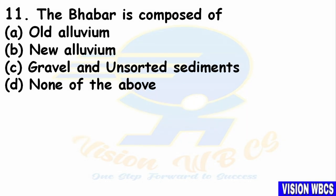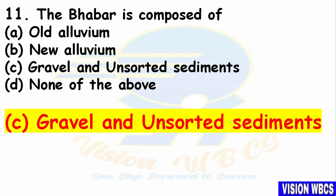Question 11: The Bhabar is composed of? Option A — Old Alluvium. Option B — New Alluvium. Option C — Gravel and Unsorted Sediments. Option D — None of the above. The right answer is Option C: Bhabar is composed of Gravel and Unsorted Sediments.